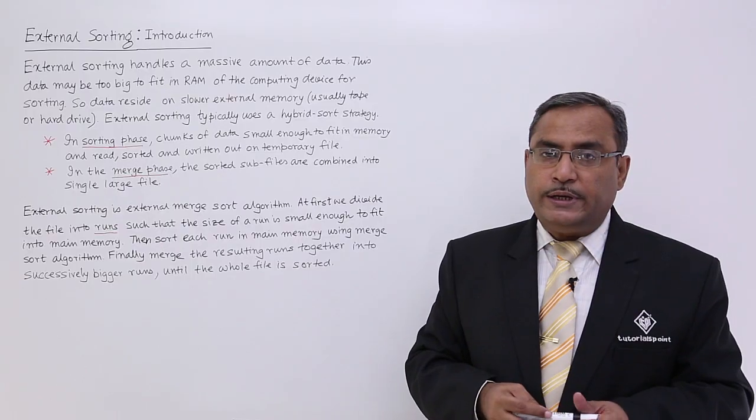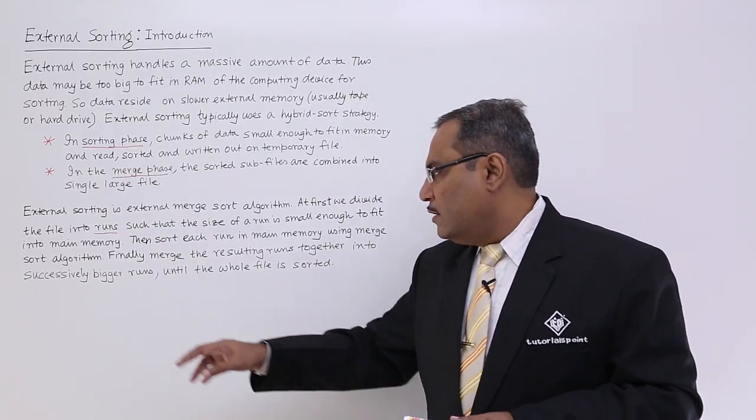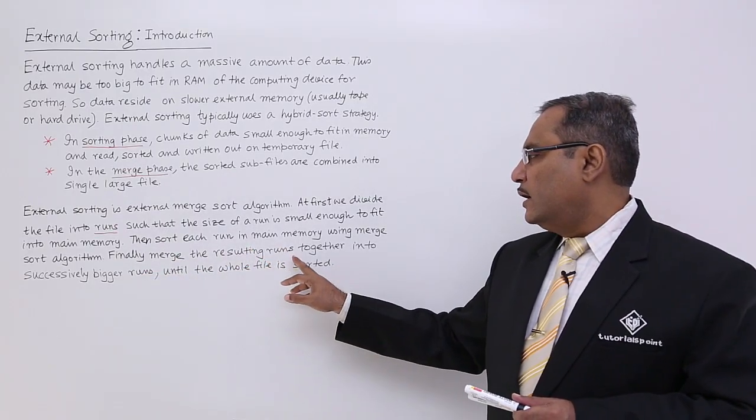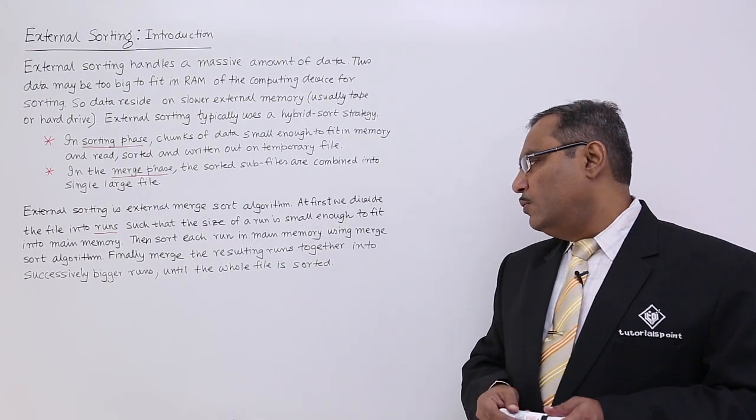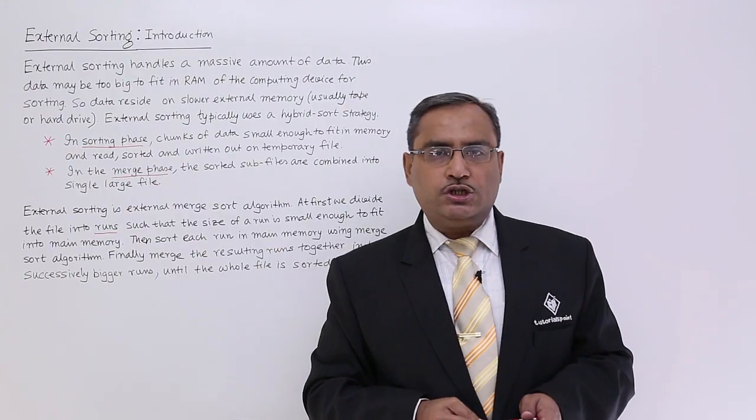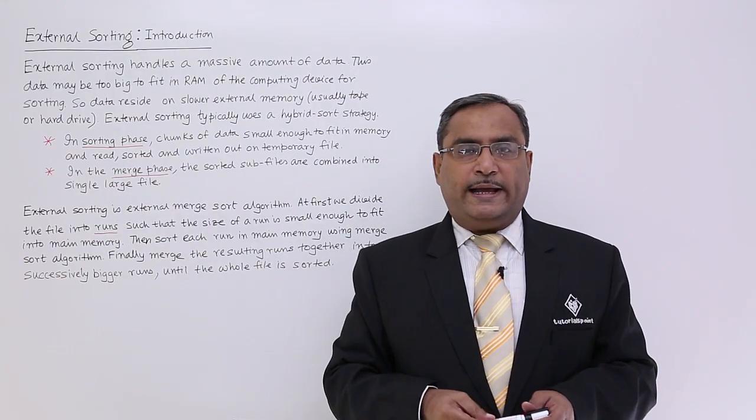Finally, merge the resulting runs together into successively bigger runs until the whole file is getting sorted. This is our external sorting.